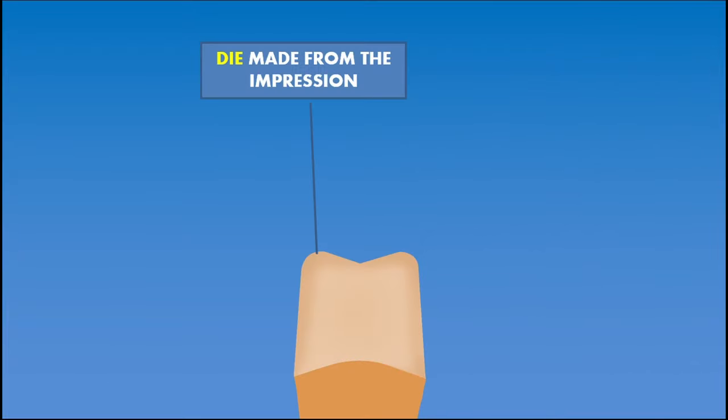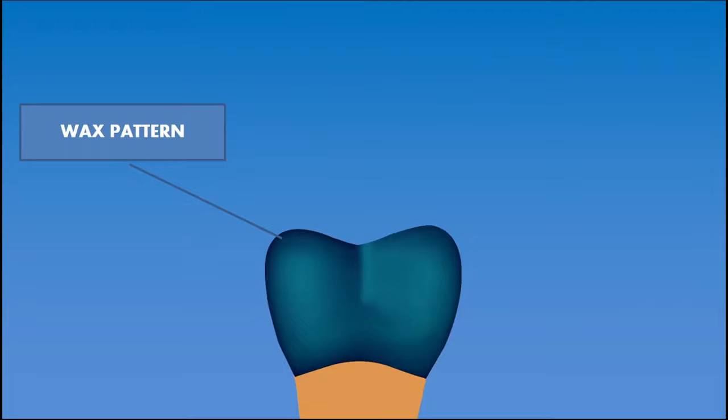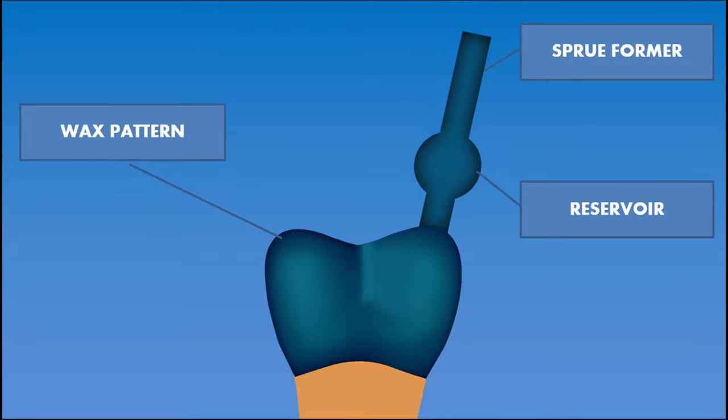Over this die, using inlay wax, the wax pattern is constructed. This wax pattern should have the anatomy, morphology and all resemblances to that of the tooth. A small piece of cylindrical wax called a sprue is attached to the bulkiest portion of the wax pattern which will act as a pathway for the entry of the molten metal in later steps. Around 2-3 mm from the position of the attachment of the sprue to the wax pattern, a reservoir is attached. Now the construction of the wax pattern is complete.